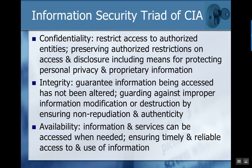Confidentiality means restricting access to authorized entities, preserving authorized restrictions on access and disclosure — the means by which personal and proprietary information can be protected. Basically, you want to make sure that the people who access data are the people who have permissions to access that data. Integrity is guaranteeing that when you receive data it is correct and has not been altered — improper information modification, ensuring the numbers are what they should be.